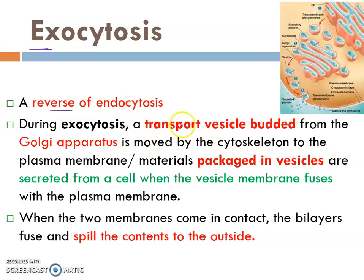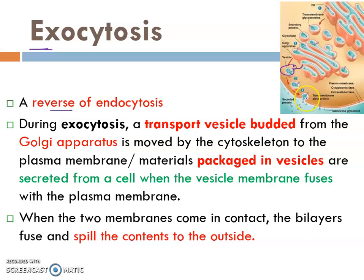Now let's look at the process. The transport vesicle that buds off from the Golgi apparatus is going to be secreted from the cell. It moves towards the cell membrane through the cytoskeleton, which acts as a railway for the vesicle to travel. The vesicles move to reach the cell membrane and then fuse together with the cell membrane.